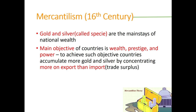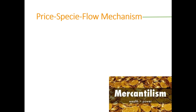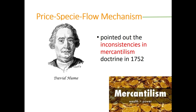Mercantilism viewed trade as a zero-sum game — one country's gain is the loss of another. David Hume pointed out the inconsistencies in mercantilism in 1752, through the price-specie-flow mechanism. He argued that in the long run, no country could sustain a trade surplus because accumulation of gold and silver would lead to an increase in the money supply and therefore to an increase in prices and wages.